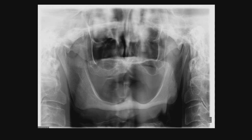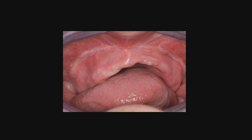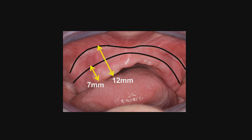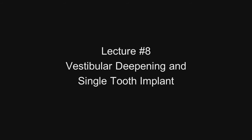Another application is in the edentulous mouth. Look at this severely resorbed maxilla — the vestibular depth was only about 7 millimeters. There's not enough bone to place implants, so an incision is made from hamular notch to hamular notch, again exposing bone in the apical area. An apical scar forms, and whereas there was a 7-millimeter vestibule, there is now a 12-millimeter vestibule, giving the denture much better retention. The pre-op and post-op views are shown, and there is a video of the patient describing how stable the denture is — she is even able to eat nuts. More detail can be found in the lecture on vestibular deepening and the single tooth implant.